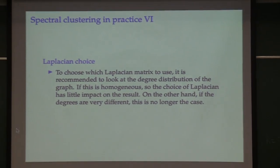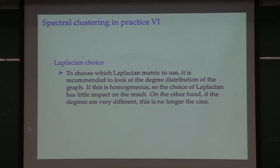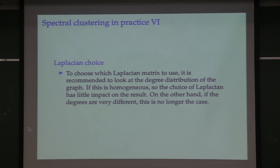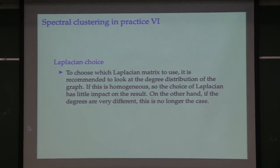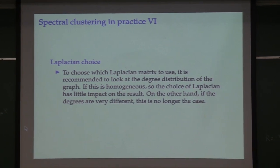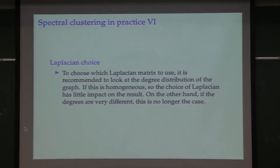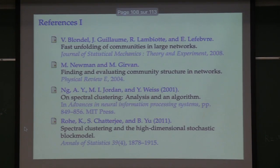To choose which Laplacian matrix to use, look at the degree distribution. If it is homogeneous — all nodes have approximately the same degree — the choice of Laplacian has little impact. But in real graphs, degrees are typically heterogeneous with hubs, so the choice does matter. Try several Laplacians. The absolute Laplacian is particularly appealing because it captures both communities and disassortative behavior.